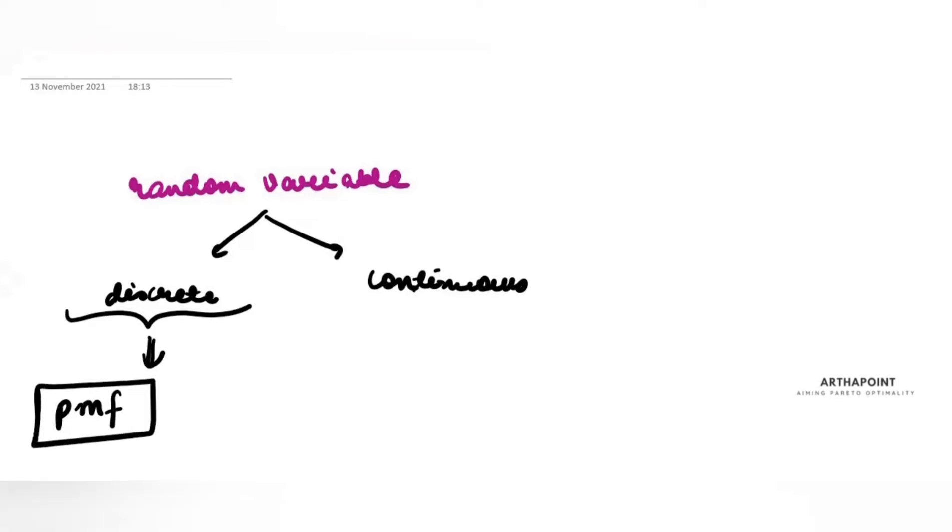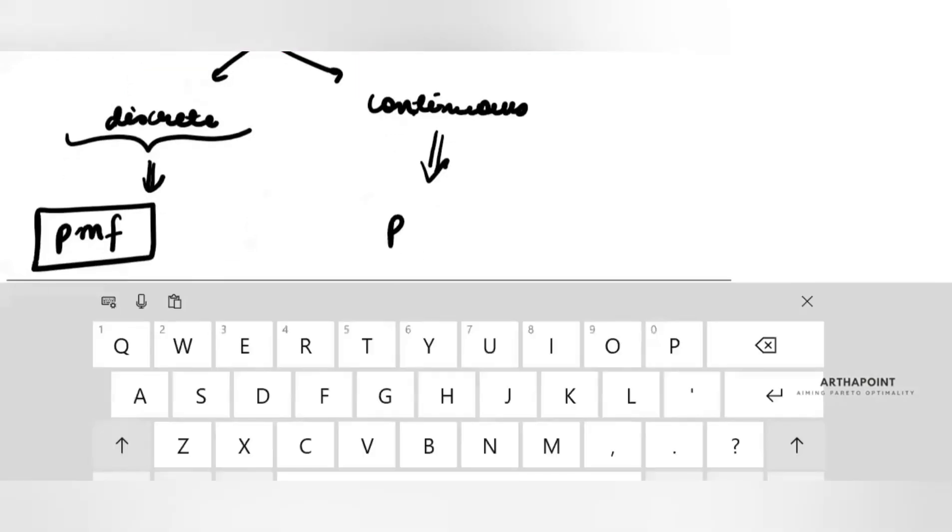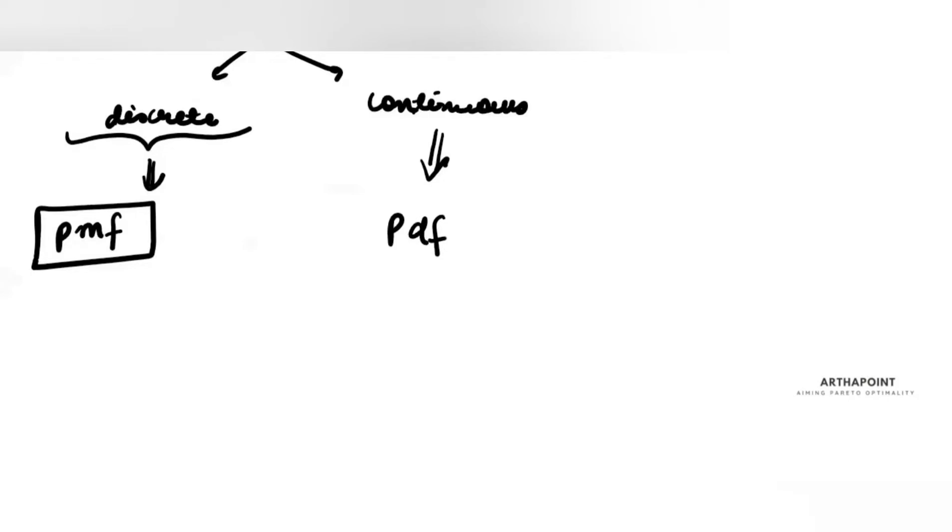I had a random variable X. This random variable X could have been discrete or continuous. When it was a discrete random variable, we introduced its probability mass function. When it was a continuous random variable, we introduced probability density function.